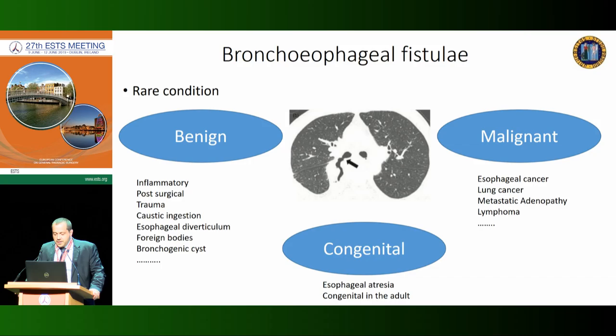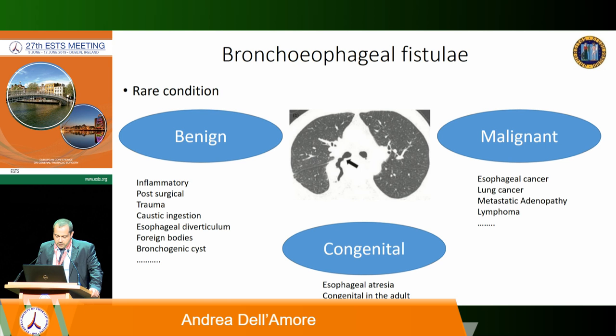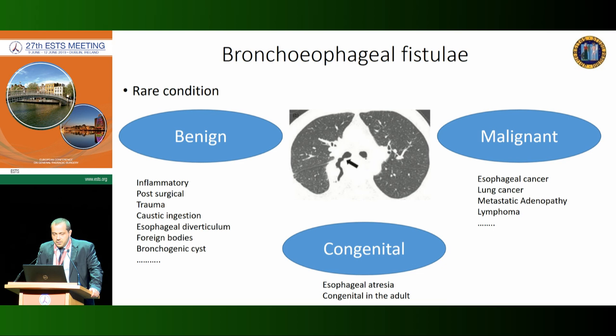Thank you for the kind invitation. Bronchoesophageal fistulas are a very rare condition and can be classified generally into three main groups. The first is the congenital one, though we must keep in mind that sometimes bronchoesophageal fistulas can become symptomatic even in adulthood. The second largest group are the malignant fistulas, generally related to esophageal cancer, lung cancer, metastatic adenopathy, lymphoma, or similar conditions.